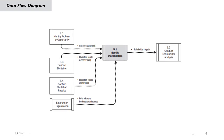The data flow diagram of this process shows inputs from the identify problem or opportunity process — the situation statement. We will also need the unconfirmed elicitation results as an output of the conduct elicitation process, and the confirmed elicitation results as an output of the confirm elicitation results process. From the organization we will need the enterprise and business architectures. The output will be the stakeholder register, which becomes the input for the conduct stakeholder analysis process.